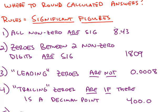Significant means that it's a meaningful number. So the first rule is any number that's not a zero always is significant. So for example, the number 8.43, all three of those digits are nonzero. So that answer has three sig figs.